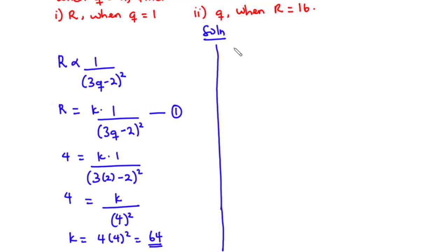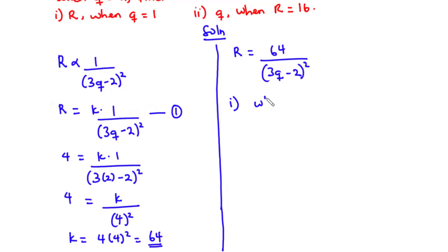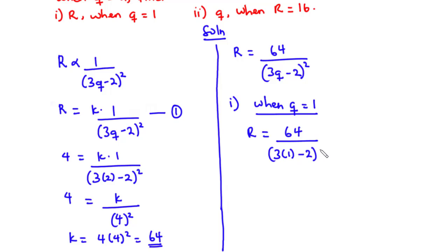So from equation 1, we have r equals 64 divided by (3q minus 2) all squared. This is the relation connecting r and q. Now let's solve for part i: we are going to find the value of r when q is equal to 1. So when q equals 1, r equals 64 divided by (3 times 1 minus 2) all squared, which is 64 divided by 1 squared, which is 1. Therefore, when q equals 1, r equals 64.